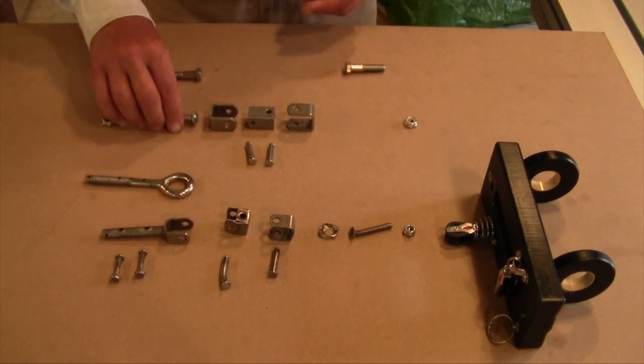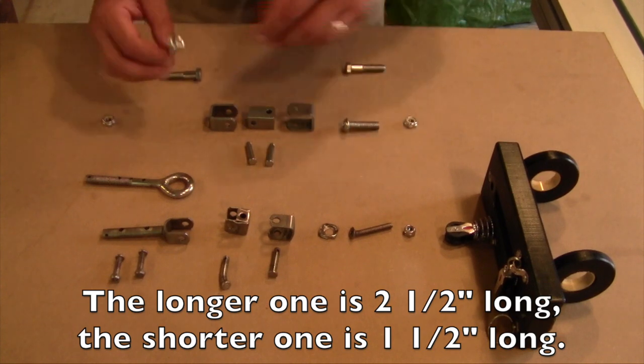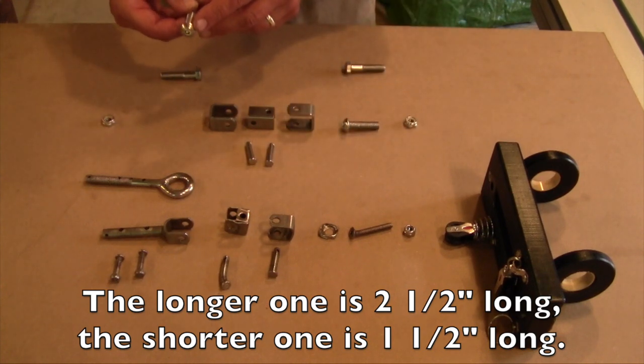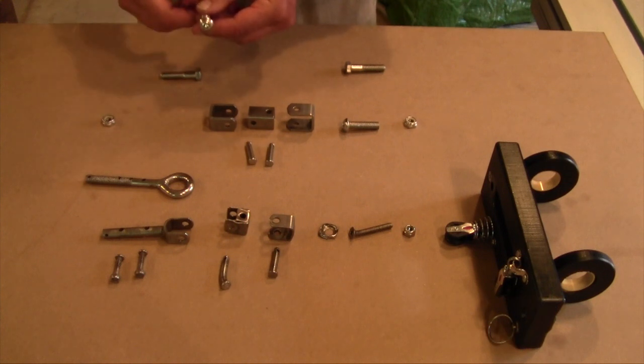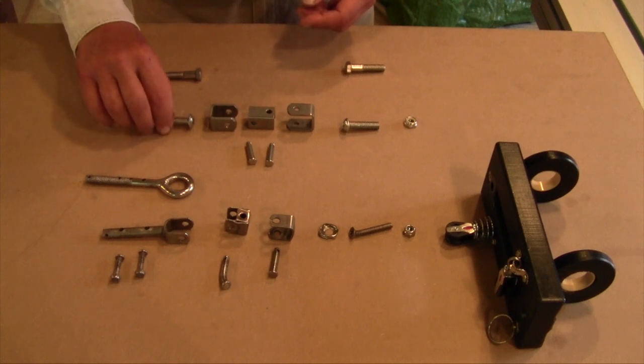So we've got these items instead, again from McMaster-Carr. These have a smaller head known as a button head instead of the hex head. It's got an indentation, a hex indentation, you can use an allen wrench on.